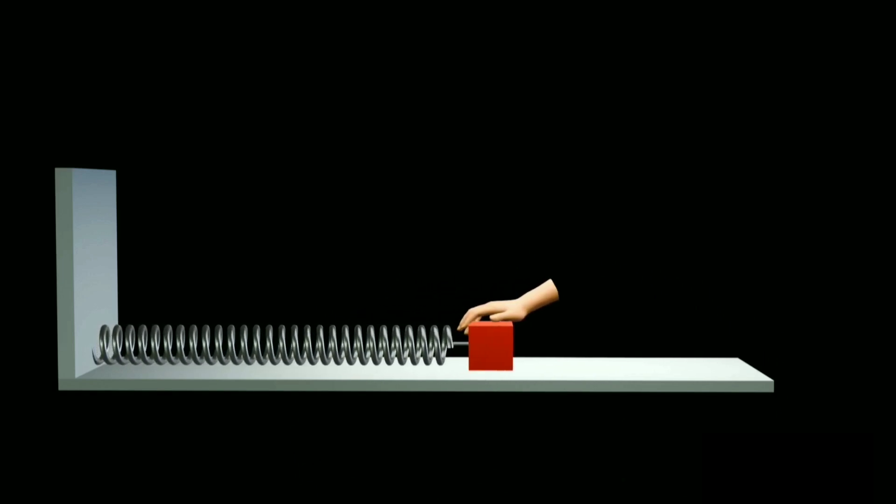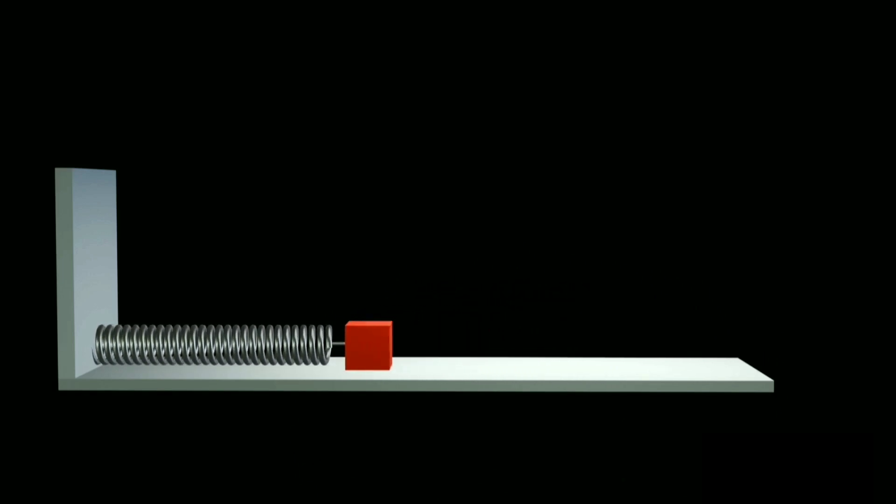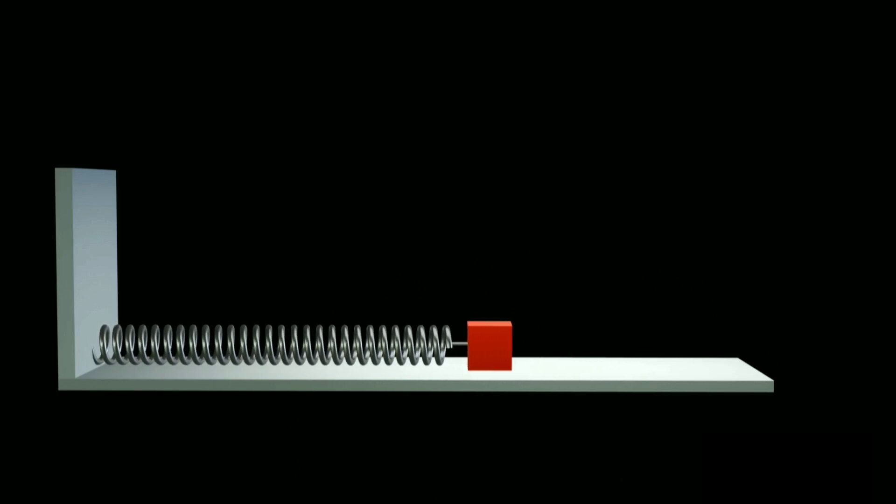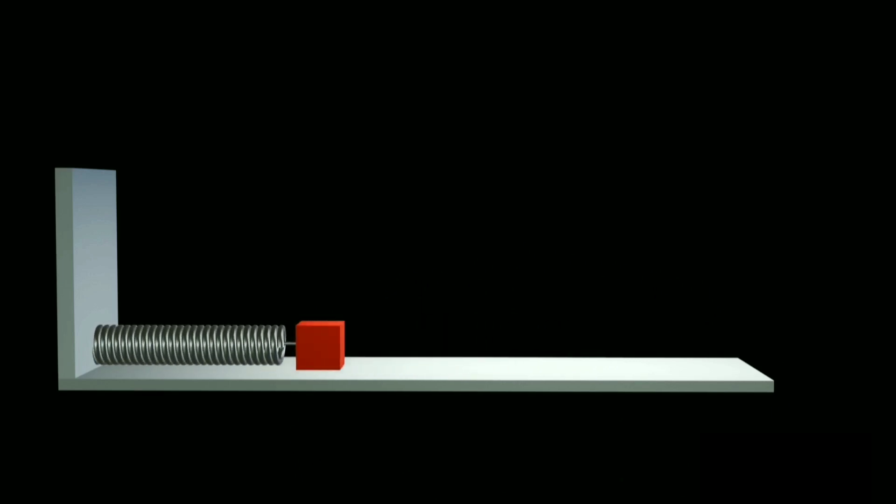Imagine a spring attached to a wall on one end and a block on the other. When you pull the block to the right and let it go, it starts moving back and forth in a straight line, like a pendulum. This is called simple harmonic motion.